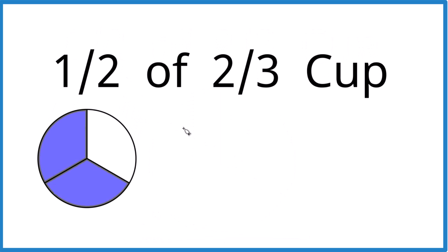So we take one half here and instead of 'of' we use multiplication. One half times two-thirds. And when we multiply fractions, one times two that's two and two times three is six.